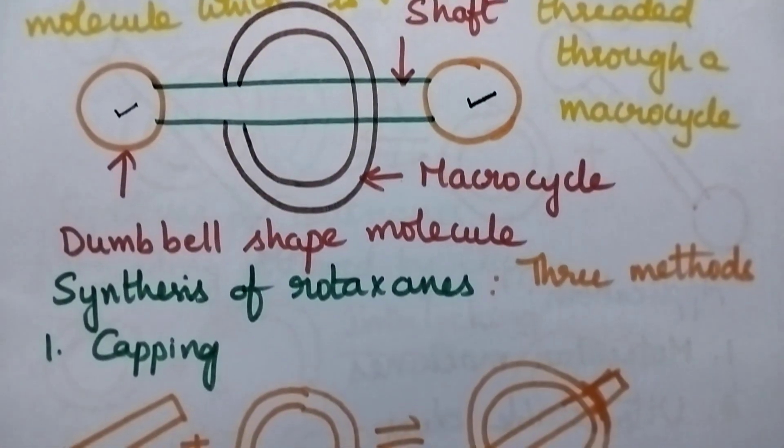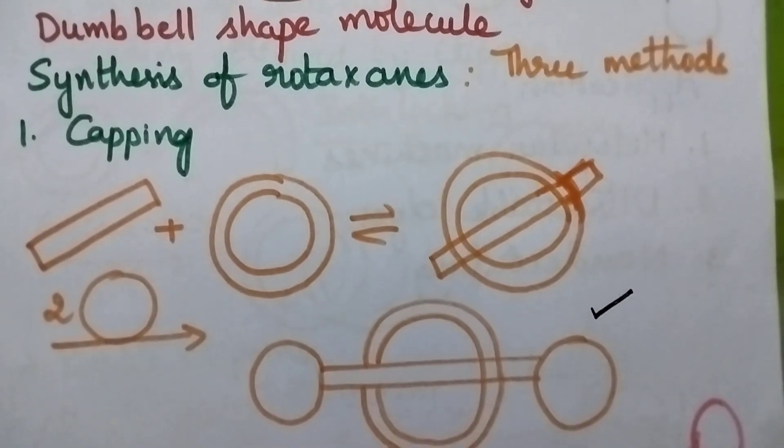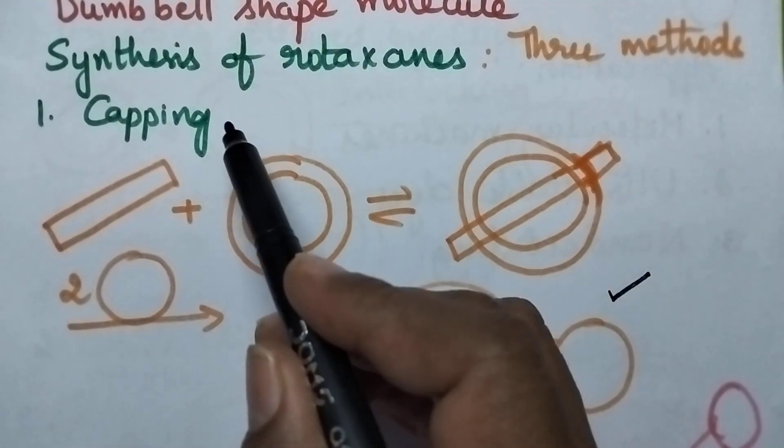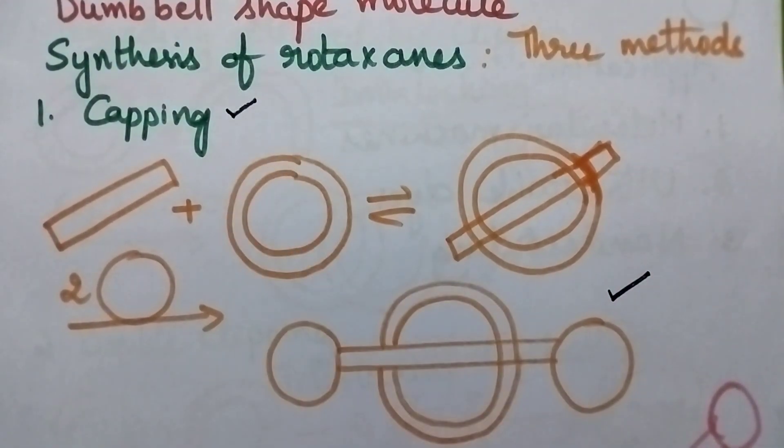Let us move on to the synthesis of rotaxanes. Rotaxanes can be synthesized by following three different methods: capping, clipping, and slipping.